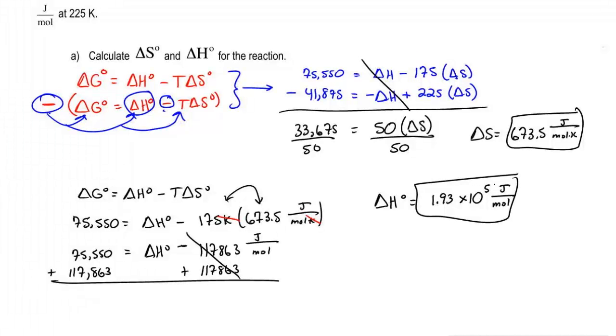This is the technique you should approach when they give you two delta Gs, two temperatures, and they ask you basically to find delta S and delta H. This is the exact method that you should use.